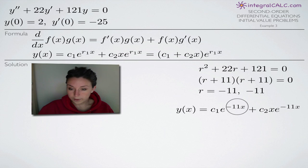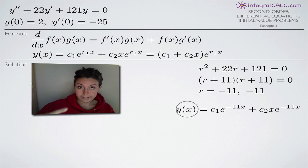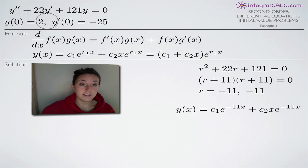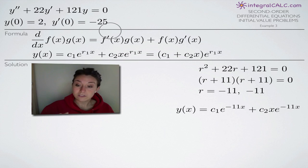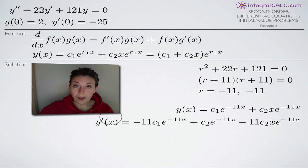Now we need to work toward solving for c₁ and c₂. Once we do, we'll have our final answer. We're going to take the derivative of y(x) to get y'(x). Once we have y(x) and y'(x), we'll use our initial conditions: y(0) = 2 goes into y(x), and y'(0) = -25 goes into y'(x). That gives us two equations involving c₁ and c₂ that we can solve simultaneously, then plug back in for our final answer.